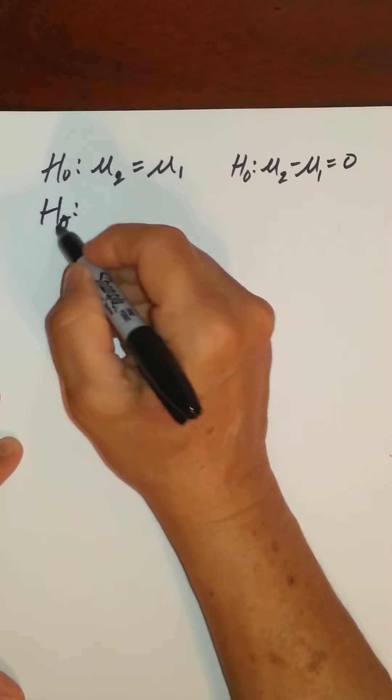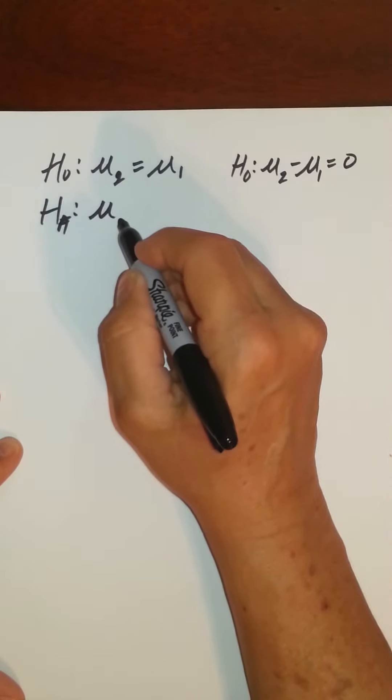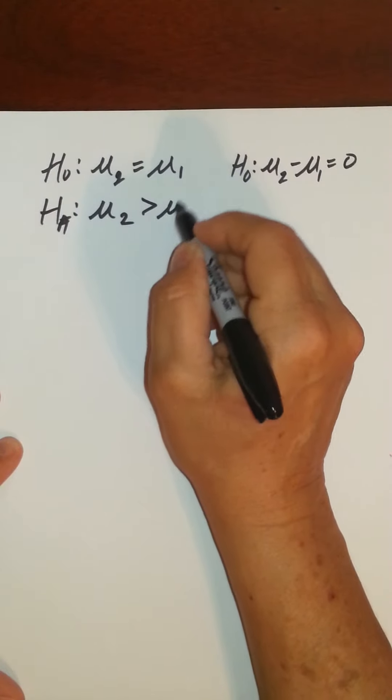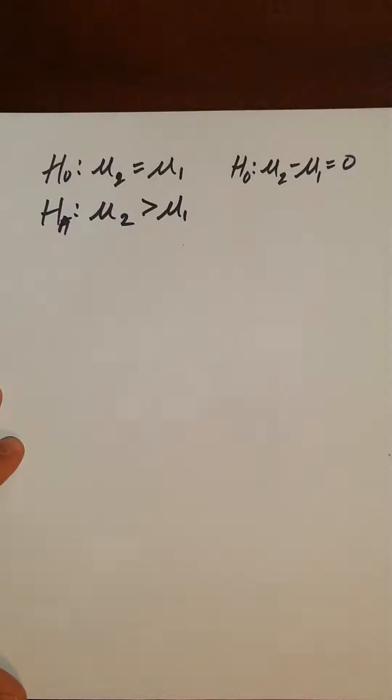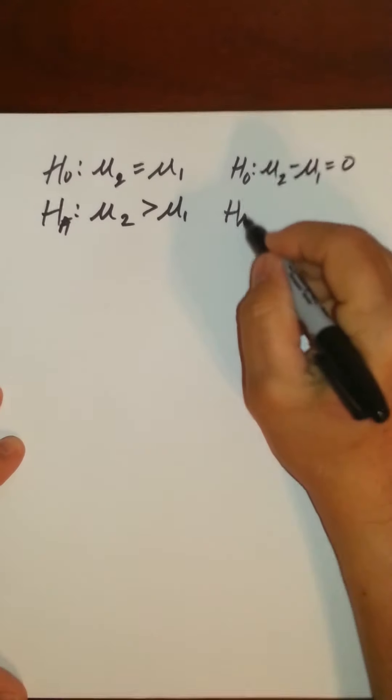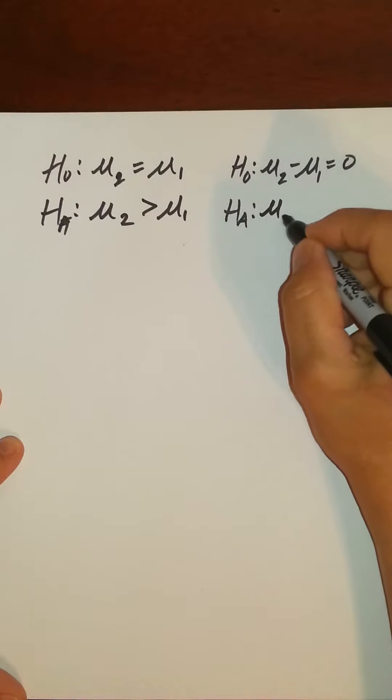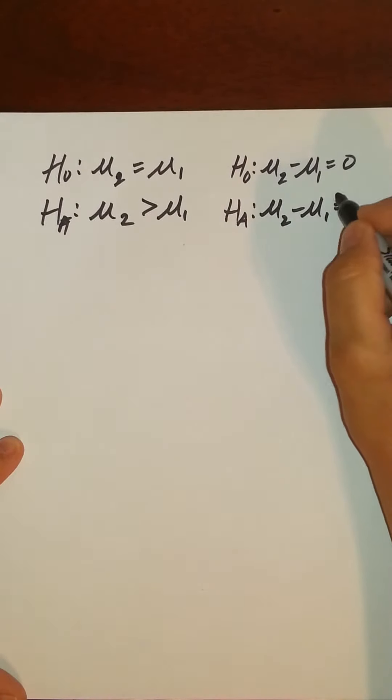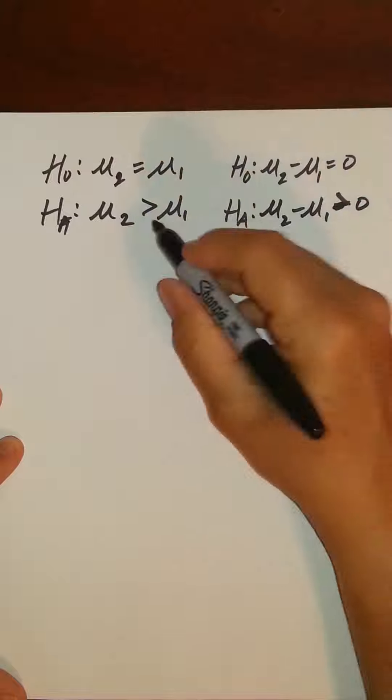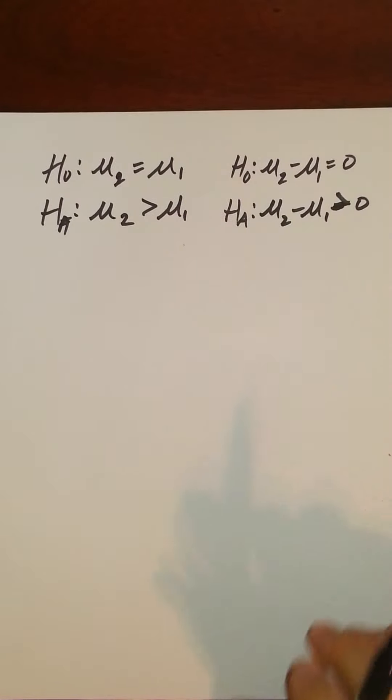For the alternative we just went ahead and set up Mu2 is greater than Mu1, that's what we got right here. And then for the alternative we could, using algebra, just subtract Mu1 from both sides and get that the difference between the two is greater than zero. So those are our hypotheses.